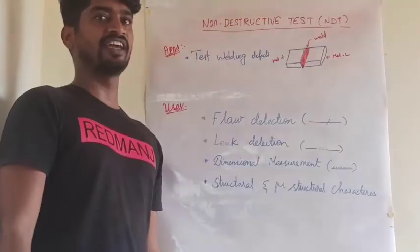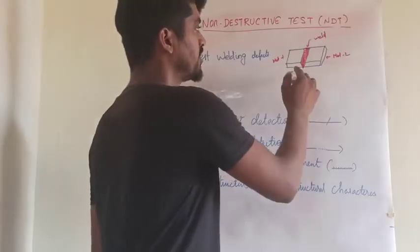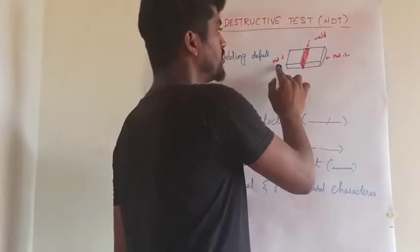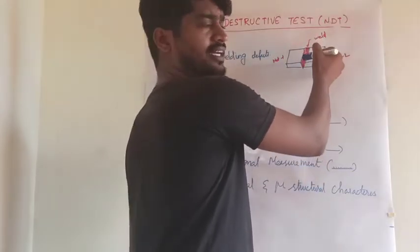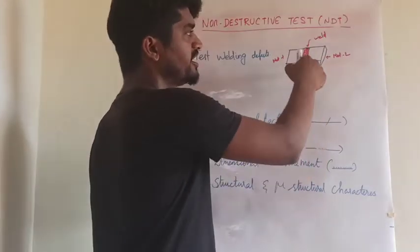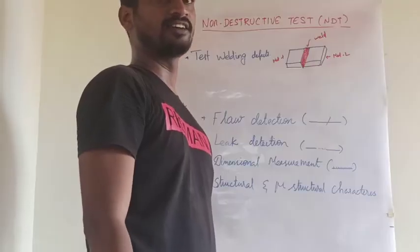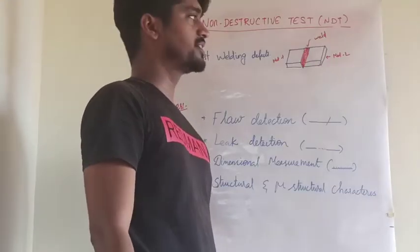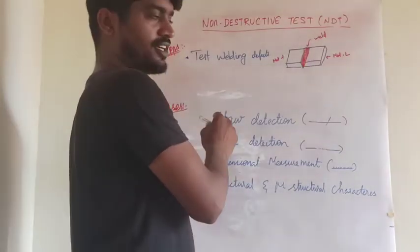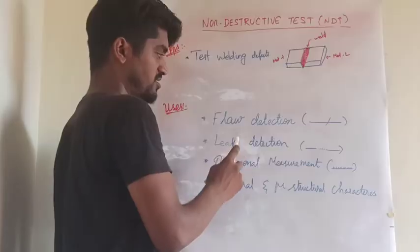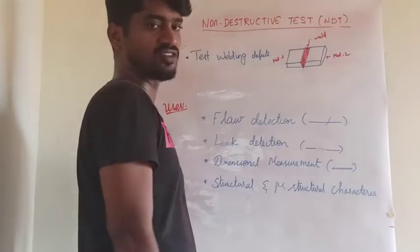The main application of NDT is to find welding defects. When two metal plates are welded — metal one and metal two — the welding process is carried out between them. If any defects occur on the welded area, we find them using non-destructive testing methods. The main uses of NDT are flaw detection, leak detection, dimensional measurement, and structural and microstructural characterization.